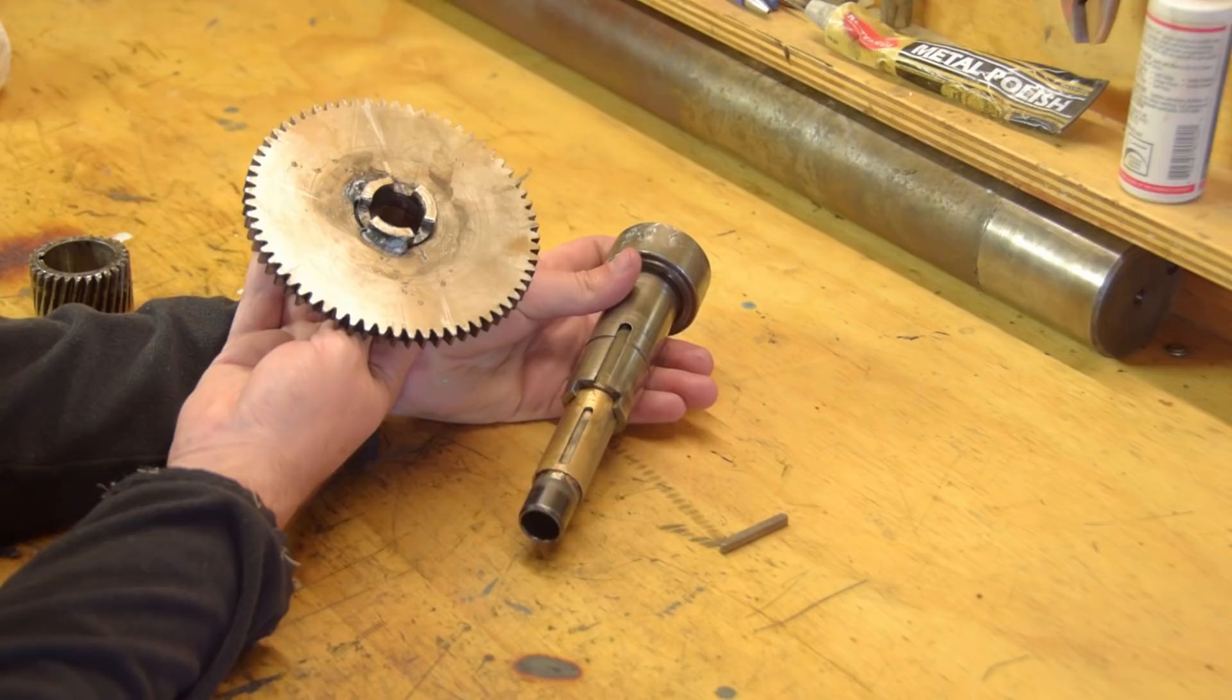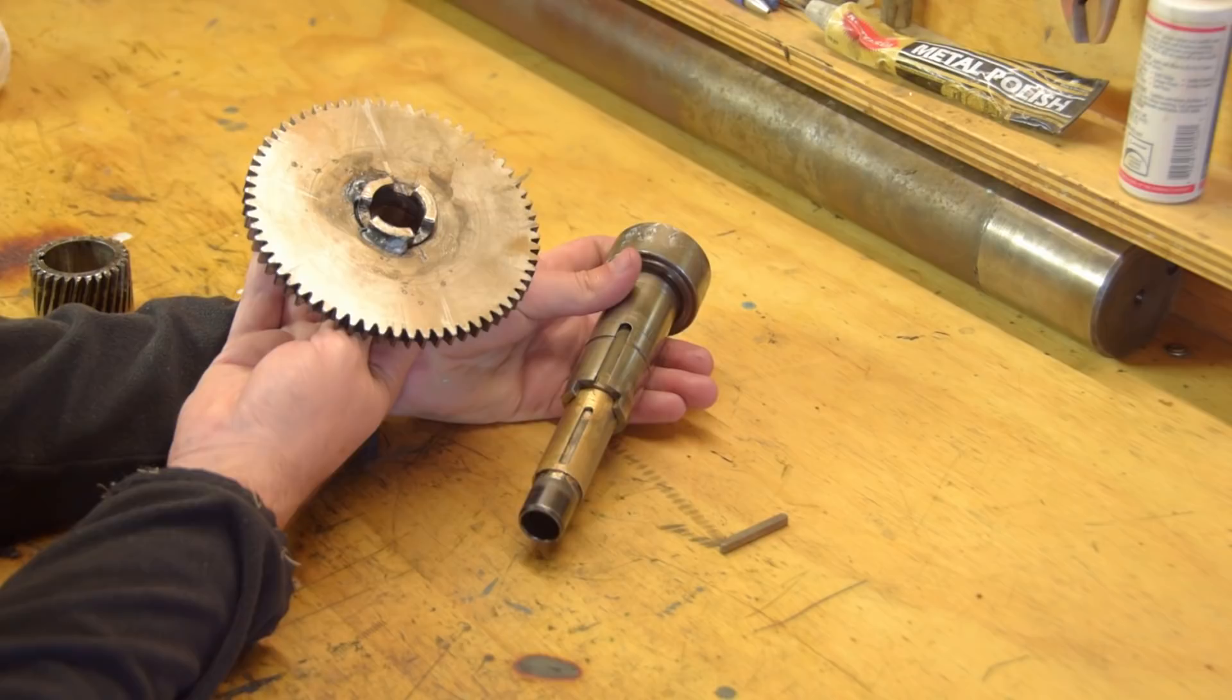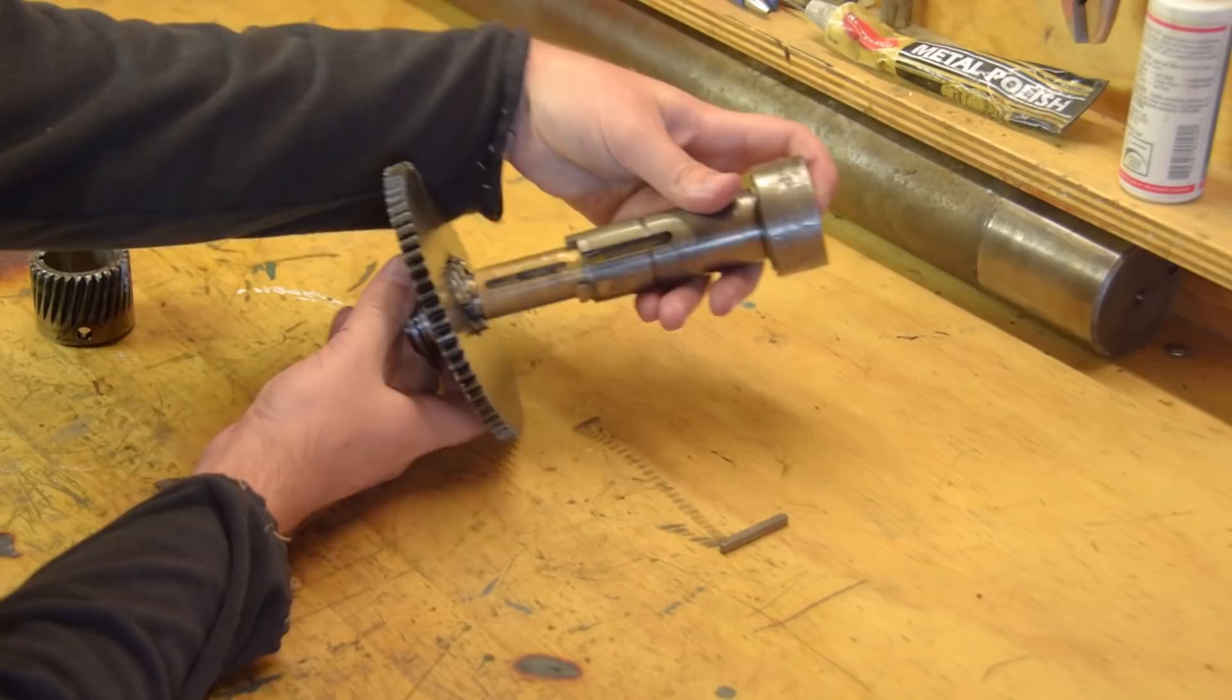Under normal operation, the dog teeth at the small end are interlocked to dog teeth on the drive gear which is keyed to the repaired sleeve. Therefore, under normal operation, these three parts are locked together.